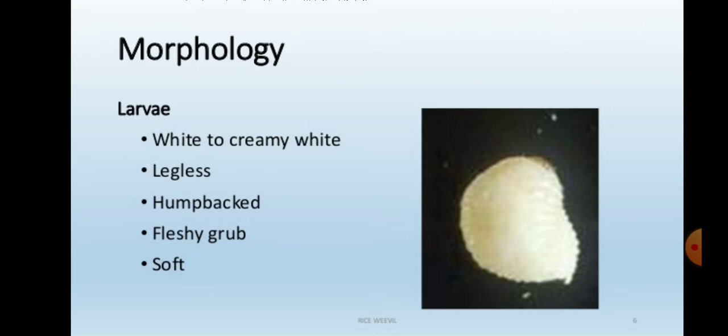The damaging stage is the grub as well as the adult. Grub means larvae — in Coleoptera, larvae are called grubs. The larvae in this order are also called grub, distinct from caterpillar or maggot. The full grown larva is 5 mm in length and is a pulpy, fleshy, legless creature.